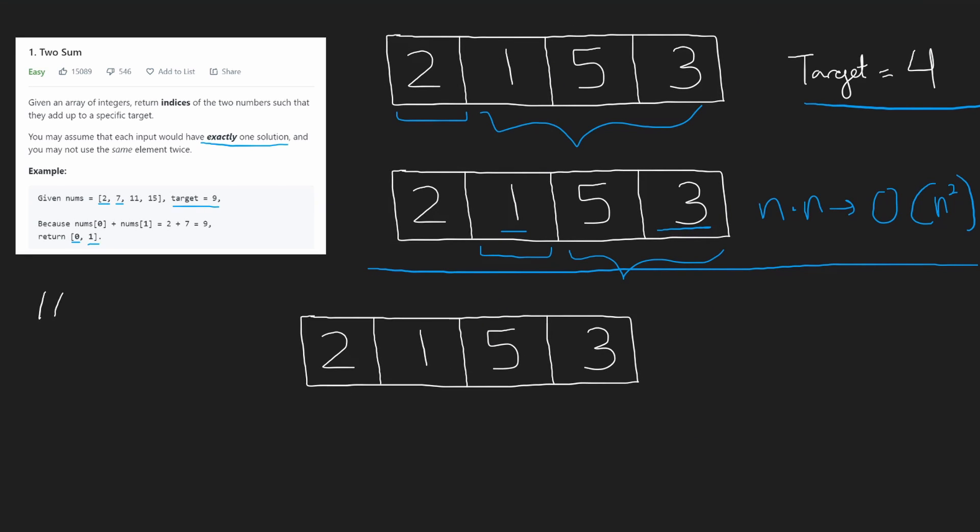Now let's try the same problem except let's use a hash map this time. Now in our hash map, we're going to be mapping each value to the index of each value. So the index of 2 is 0, the index of 1 is 1, the index of 5 is 2, the index of 3 is 3. So in our hash map, we're going to be mapping the value to the index.